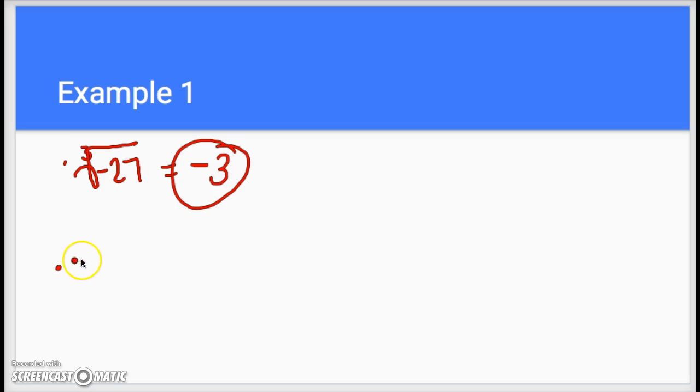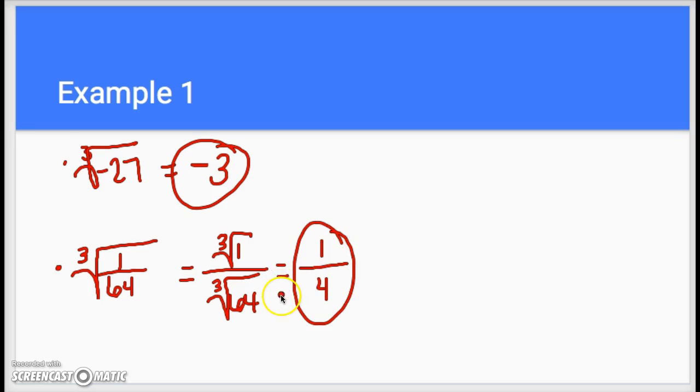Another one like this we're going to do is taking the cube root of a fraction, which we've talked about a little bit. So let's say we have the cube root of 1/64. Again, we're splitting this into two: the cube root of one over the cube root of 64. The cube root of one is one and the cube root of 64 is four, so your answer would be 1/4.